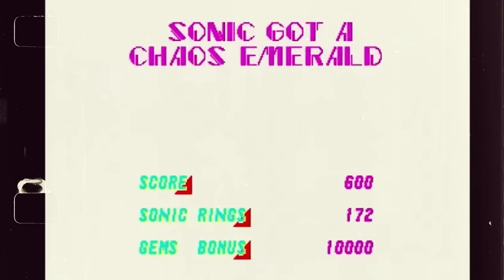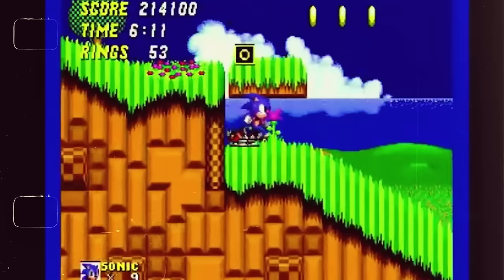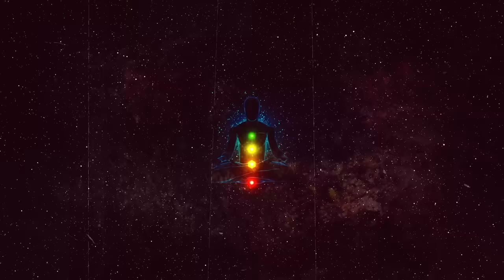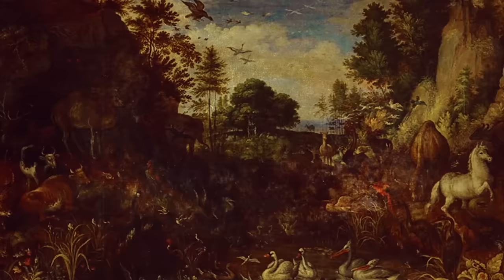In his journey, Sonic must collect seven emeralds to transform into his godly form, Supersonic. Similarly, to reach a divine state, we need to balance our seven energy centers, culminating in the activation of the higher mind, located in the crown chakra.